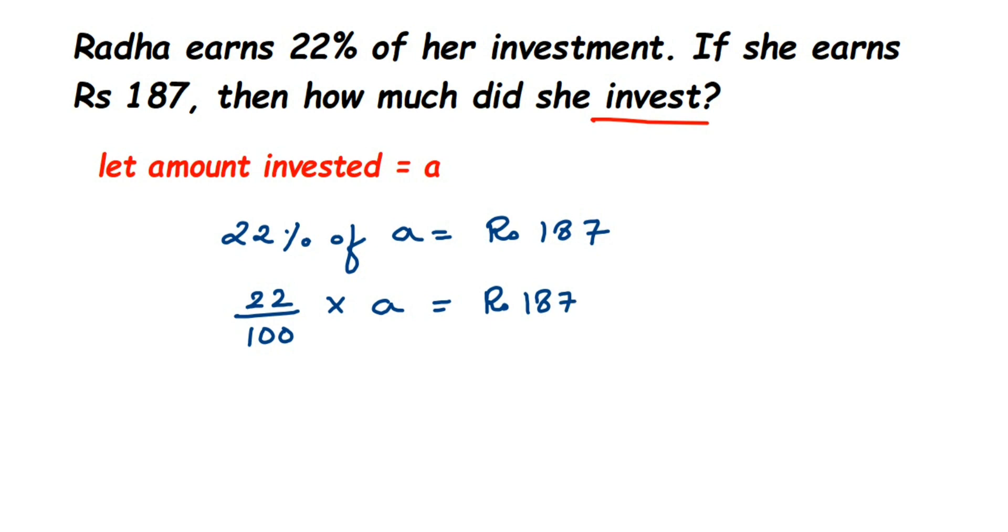We have a, and then this is equal to rupees 187. Now we have to find out the value of a. So I'm going to transpose this 22 upon 100 to the other side. Now see, this 22 is in multiplication, 100 is in division here. So if there was a plus or minus sign, I would have transposed the whole thing to the other side, but since multiplication is there here, I have to transpose that.